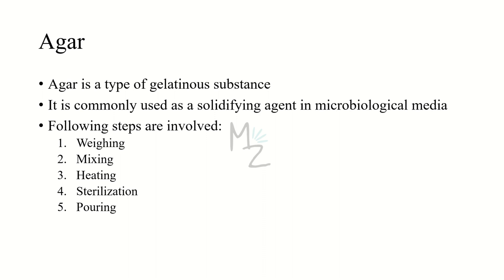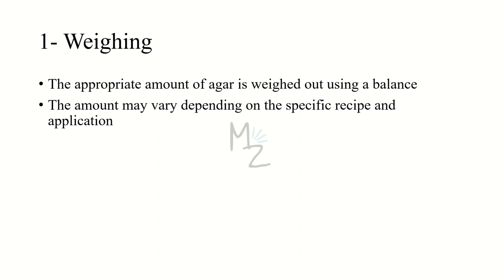Agar preparation has five steps: weighing, mixing, heating, sterilization, and pouring. The first step is weighing — the appropriate amount of agar is weighed out using a balance. This amount may vary depending on the specific recipe, the application, and which agar infusion or agar plate you are using.